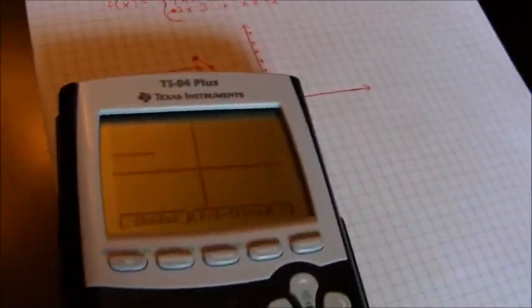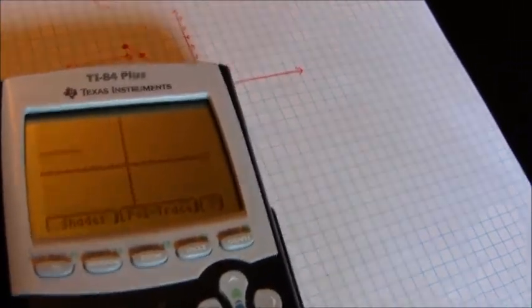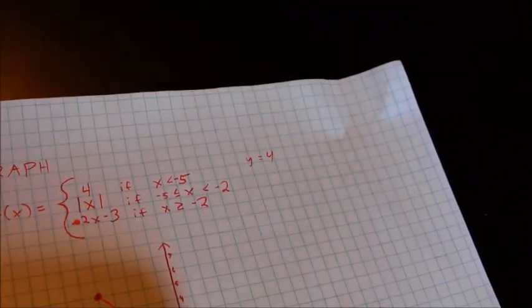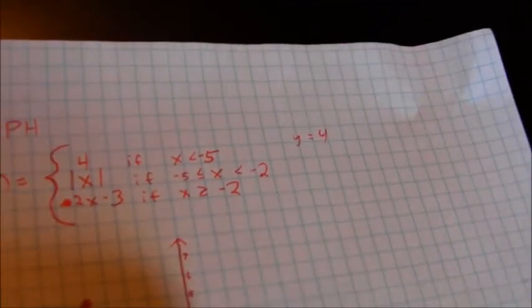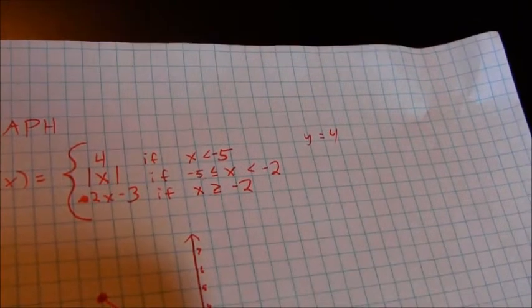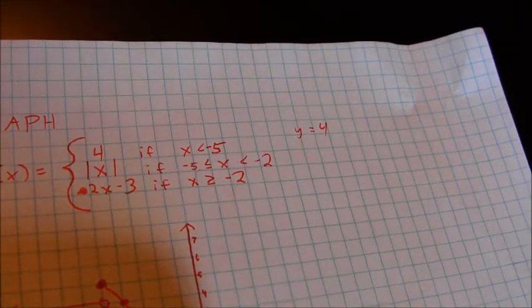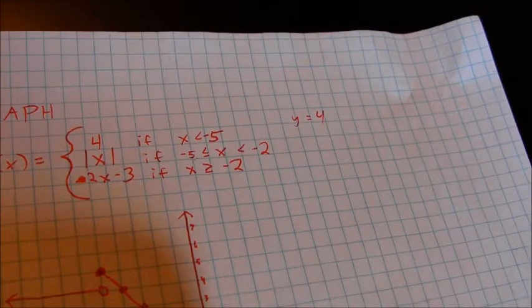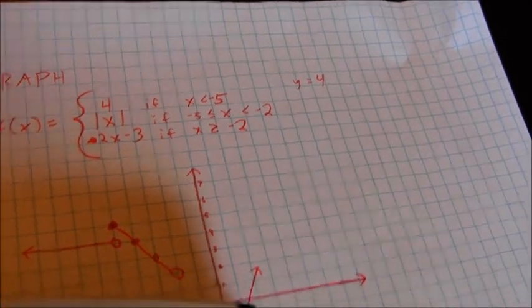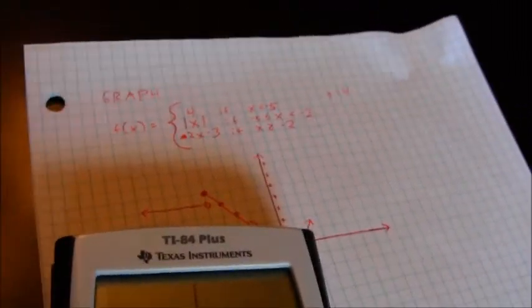Now, the next part with the absolute value function, for example, one thing that changes a little bit, and this is something you have to think about, is notice that the x value there is between two values. You actually set up two separate inequalities. x is going to be greater than or equal to negative 5, and x is going to be less than negative 2. So you actually do two sets of things in parentheses.